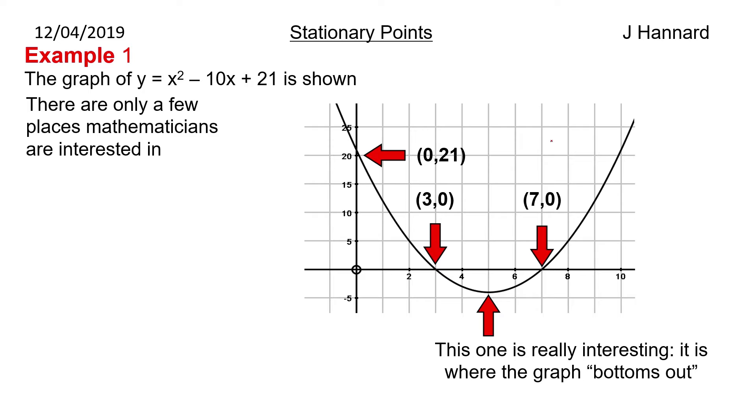If you think of this curve being infinitely many straight lines, there'll be a straight line that goes horizontally right there. So that's what a stationary point is and it has 0 gradient. It is a flat line.